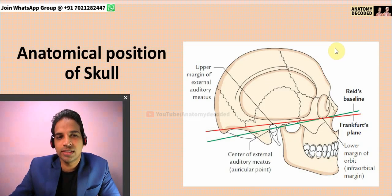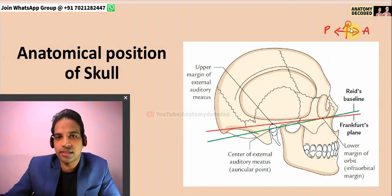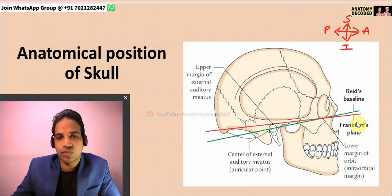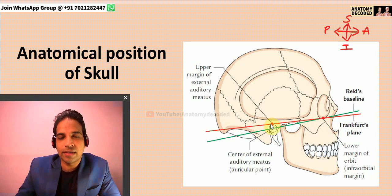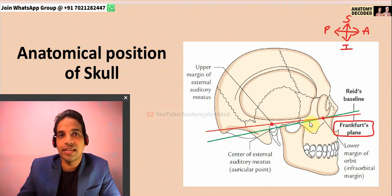How to hold the skull in anatomical position: the skull has to be held in such a way that the anterior and posterior parts are correctly oriented, superior and inferior as well. Two planes are important here. This is the orbital margin — the inferior margin of the orbital foramen — and the upper margin of the external acoustic meatus. Drawing an imaginary line joining these two points gives us Frankfurt's plane. The skull must be held so that these two points lie in one horizontal plane.